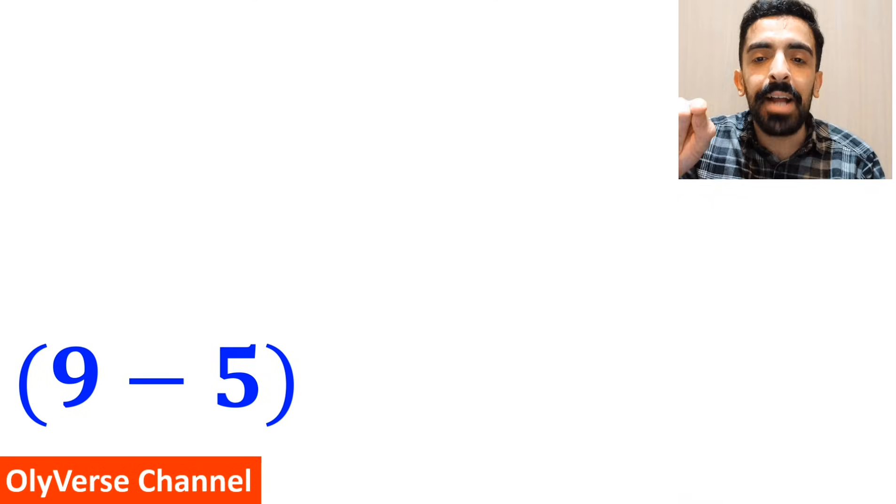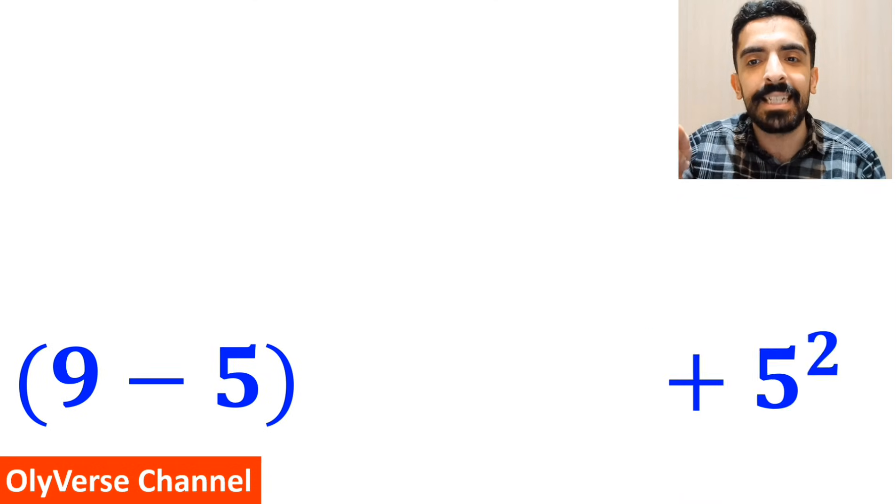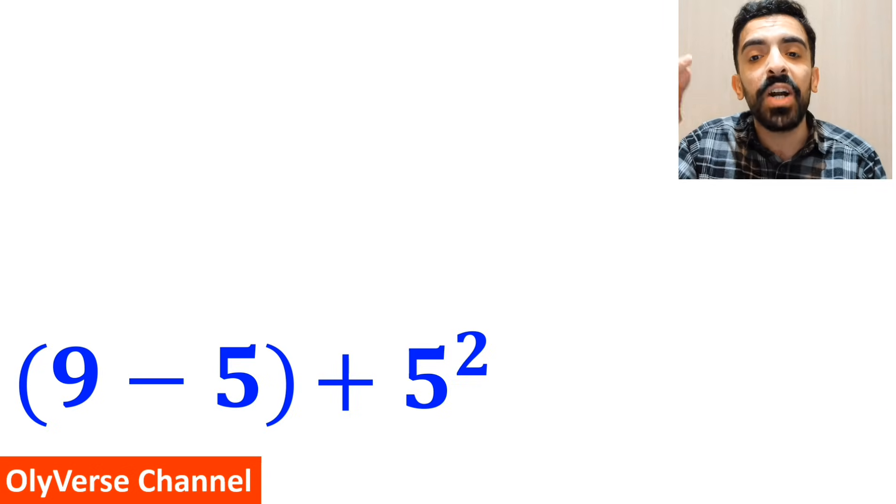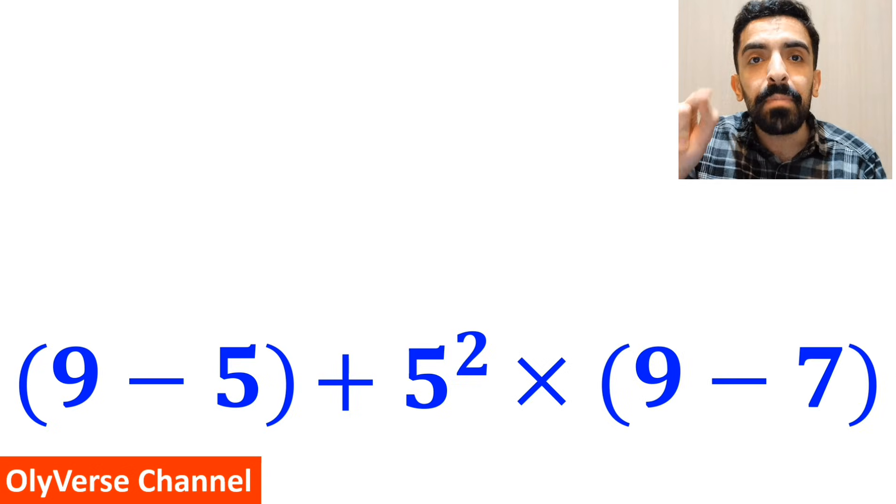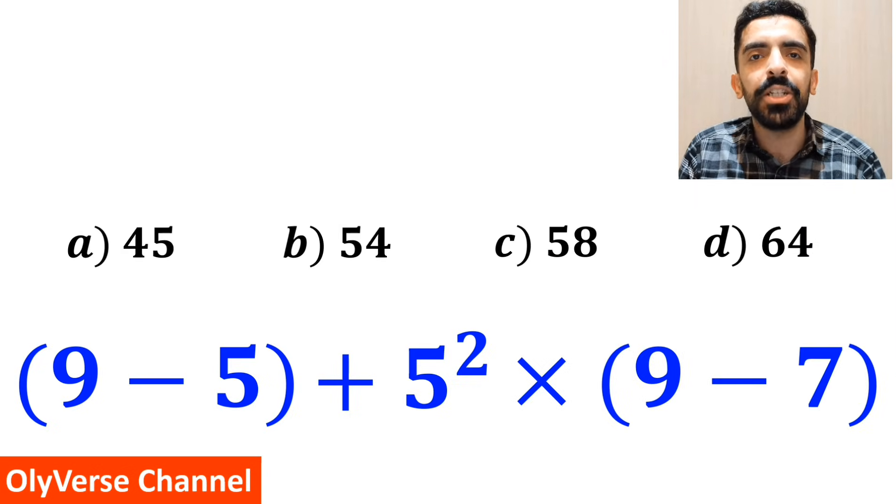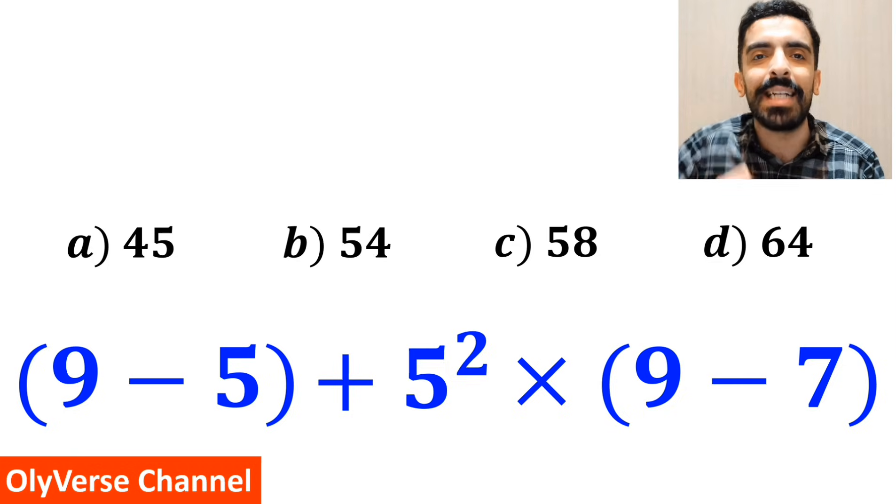What is the value of the expression (9 - 5) + 5² × (9 - 7)? Which option do you think is the correct answer to this question?